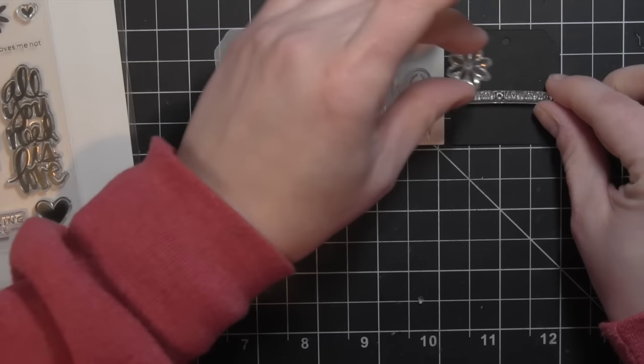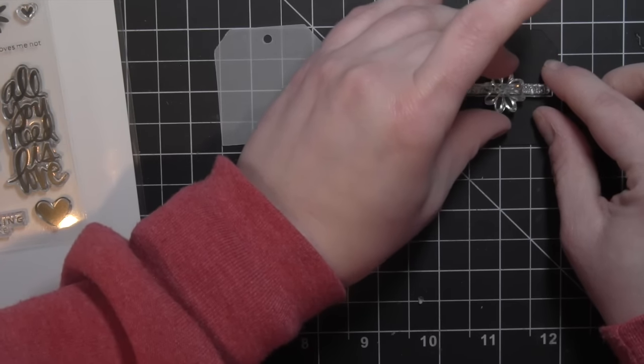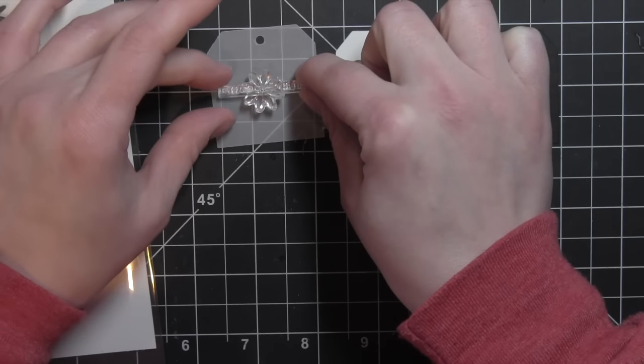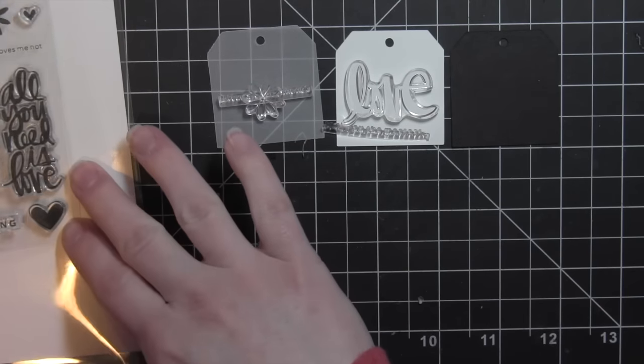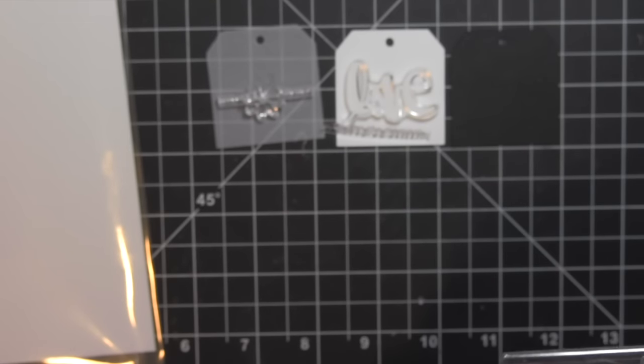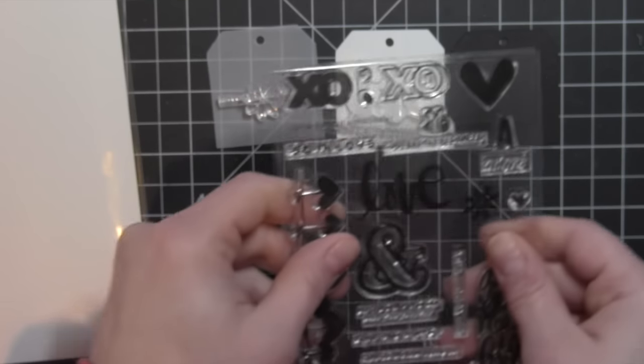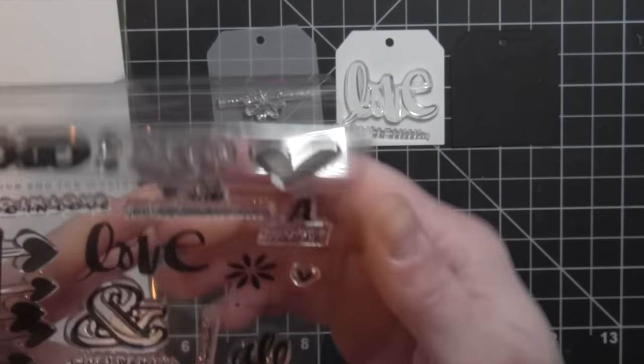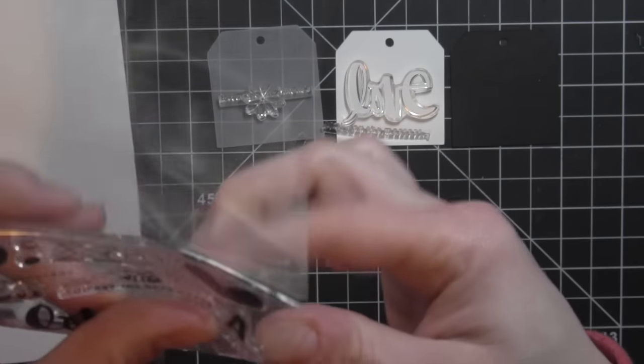I love how these stamps mix and match to create really unique fun images. Like the little heart goes with the love me love me not, and the little dot will work as the center of the flower which I think is so unique and clever.